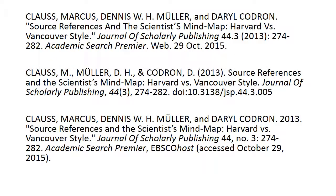Here I have three citations that are of the exact same item in three different styles. You can see the first information is the author's information. Some have the article title, source references, and the scientist mind map — Harvard vs. Vancouver style, which are two more citation styles that you might run into. That's the article title, and then Journal of Scholarly Publishing is the journal. The volume is 44, the issue is number three, and the page numbers are 274 through 282. Some citation styles give the date that you found it and the resource that you found it in. One of them doesn't. And then one of them has a DOI or URL.